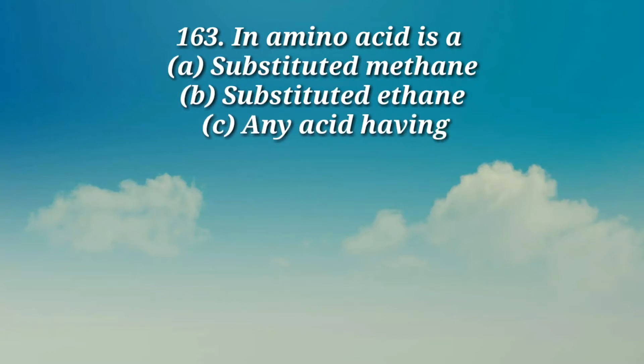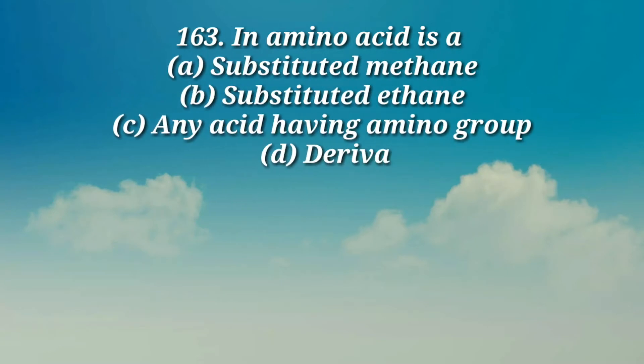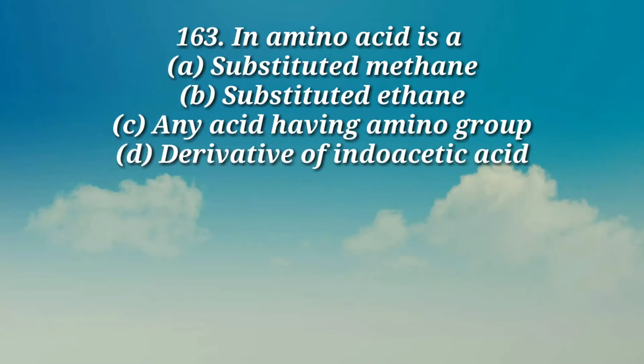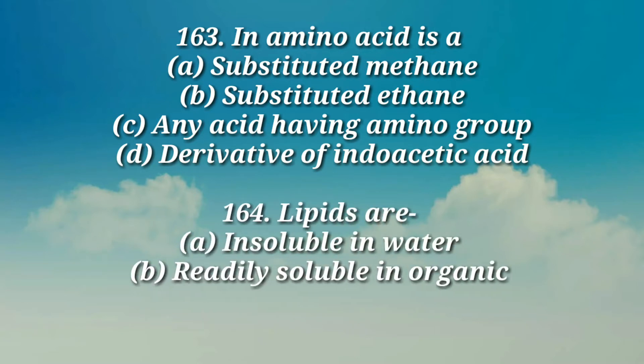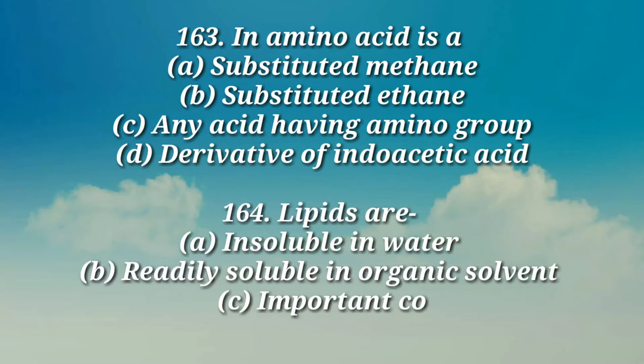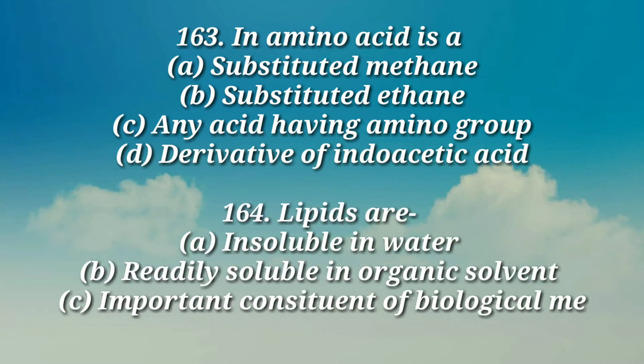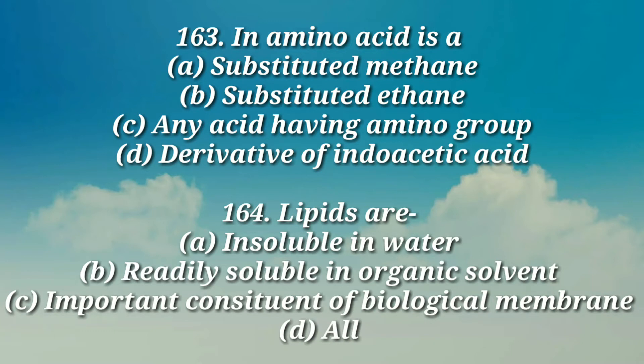Question number 163: An amino acid is — a) a substituted methane, b) substituted ethane, c) any acid having an amino group, d) a derivative of endoacetic acid.